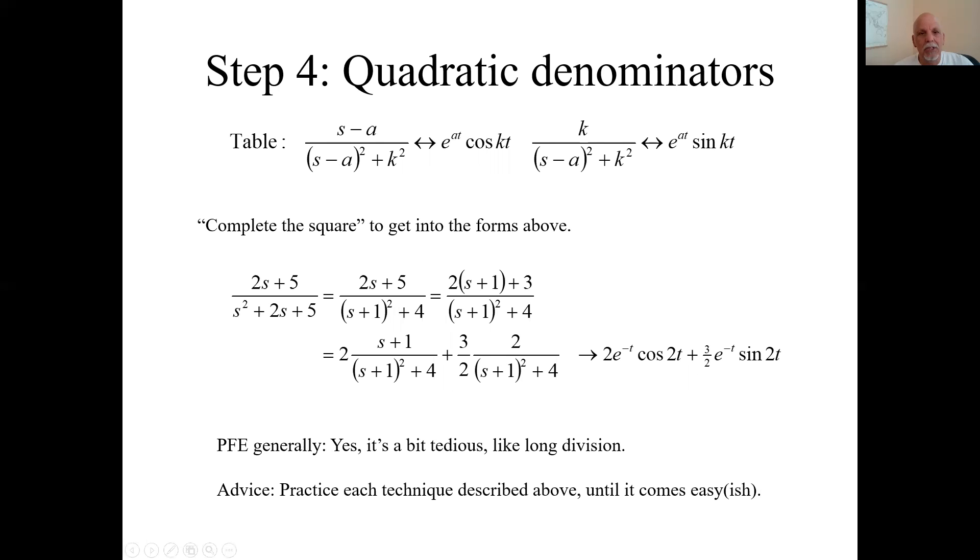But what we're using are these terms in the table. Here's the s part and the corresponding t time equation. Time domain and the Laplace domain. We've seen these before. These e to the a t cosine and e to the a t sine terms. We're trying to get things into terms that look like either this guy or this guy.